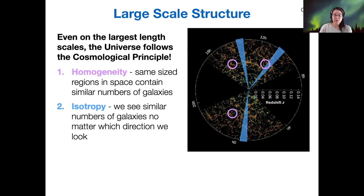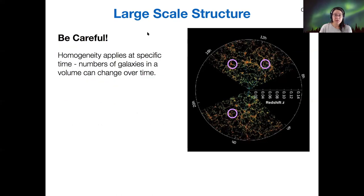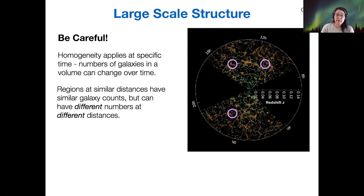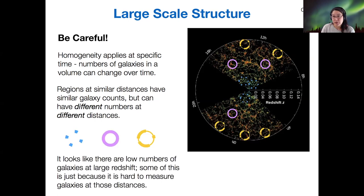That's our final conclusion there. There are a couple caveats I should mention. First, there's motion within the universe, so the number of galaxies in a given volume can change over time. The second thing is that various regions have similar numbers of galaxies but they can have different numbers at different distances.